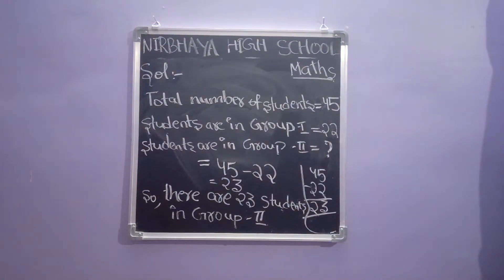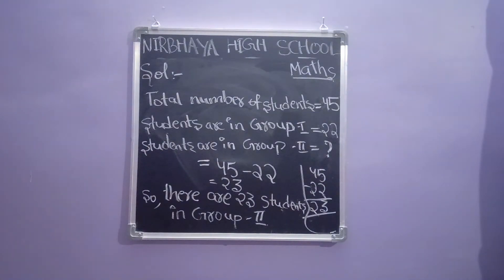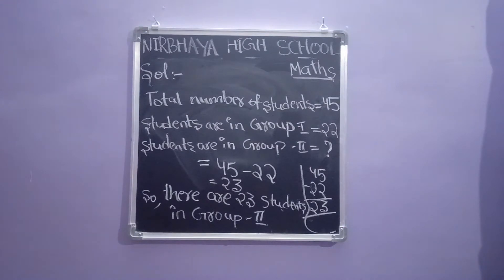Copy the 16th sum solution in your workbook. Next sum: the 17th one. First copy in your workbook, then we'll look at the 17th sum.